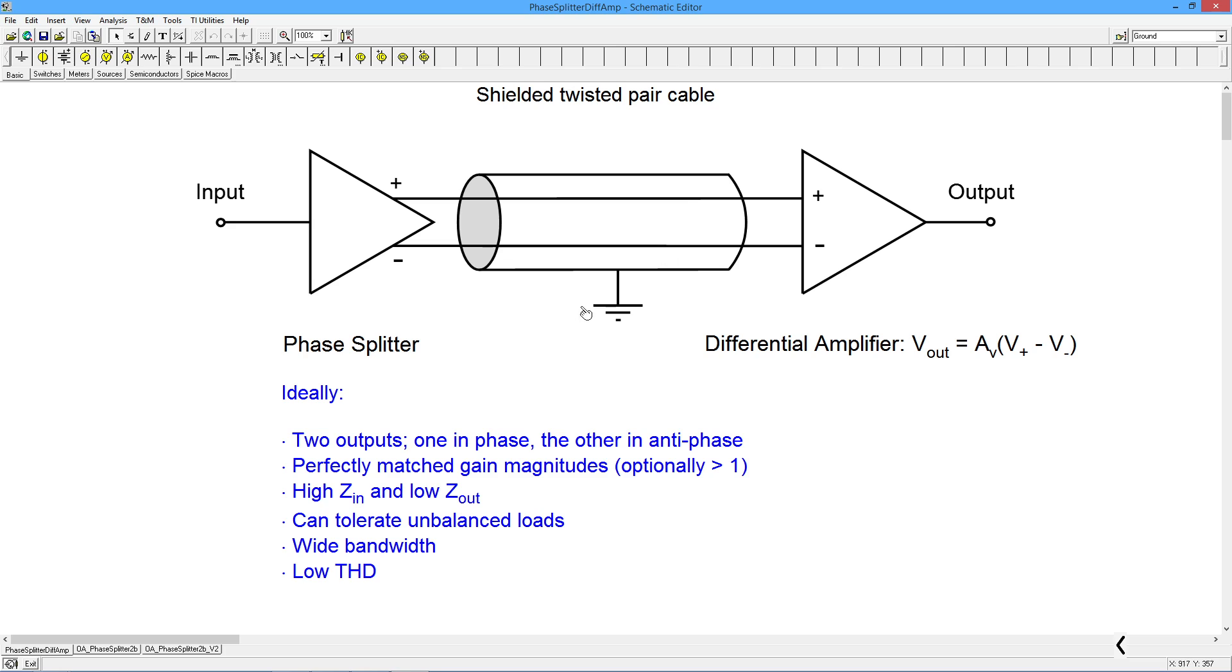So where does it find a lot of use? Pro Audio is one example. So when you take a look at a microphone, it'll have three pins on it. You have a ground pin, you have the hot or in-phase lead, and then you have the anti-phase lead, which is sometimes referred to as neutral.